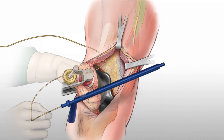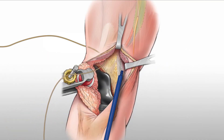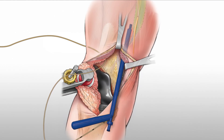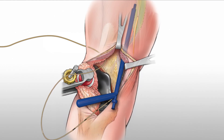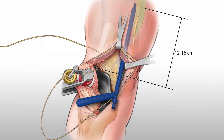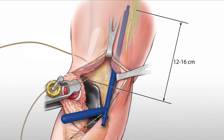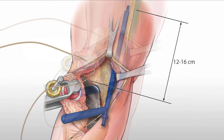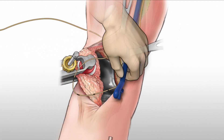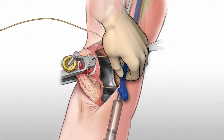The introducer with the catheter secured inside is then advanced through the entry point, 12 to 16 cm cephalad to the superior pole of the patella along the femoral shaft just anterior to the intramuscular septum. Attaching a syringe to the introducer, the surgeon can bolus a dose of local anesthetic to provide an adductor canal block.